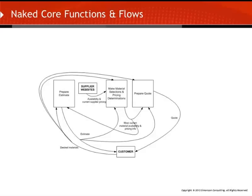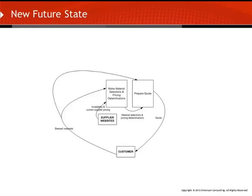The gallery owner tells us that she assumes the estimate process will still be necessary, but in a perfect world the customer would be able to obtain a firm quote right away. We now paint a new picture to represent our future core functions and flows — we do not need to provide an estimate to the customer if we can provide a quote right away. So what are we left with? We have two remaining activities: make material selections and pricing determinations, and prepare a quote. We need information from supplier websites and the desired materials of customers, then we are able to provide the customer with a quote for commissioned art.